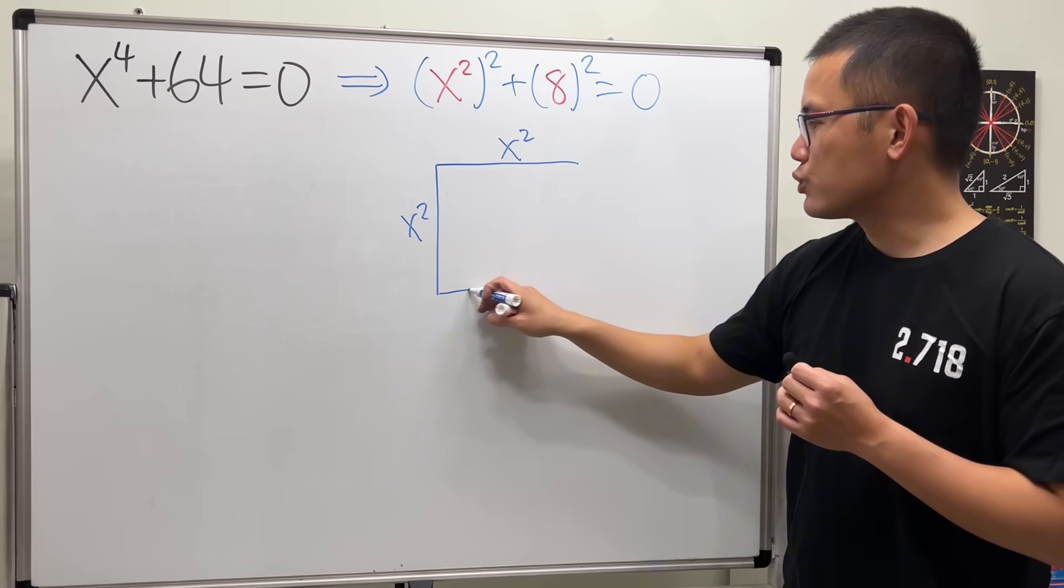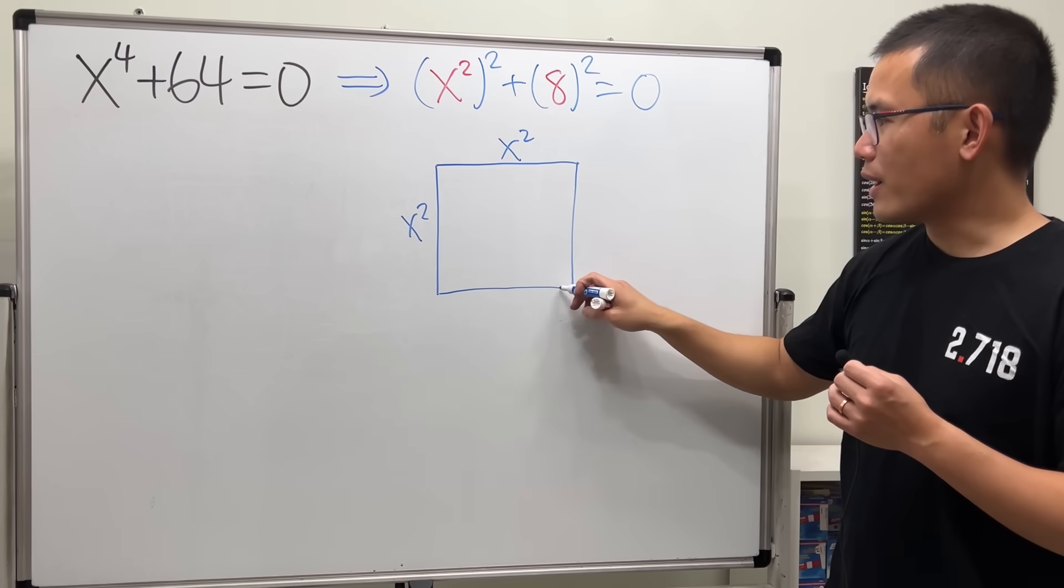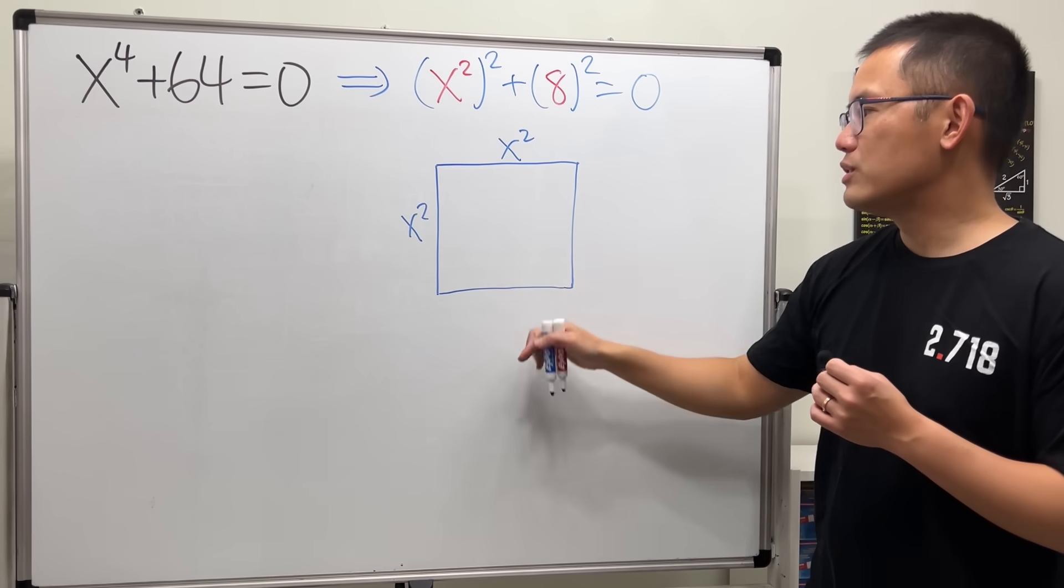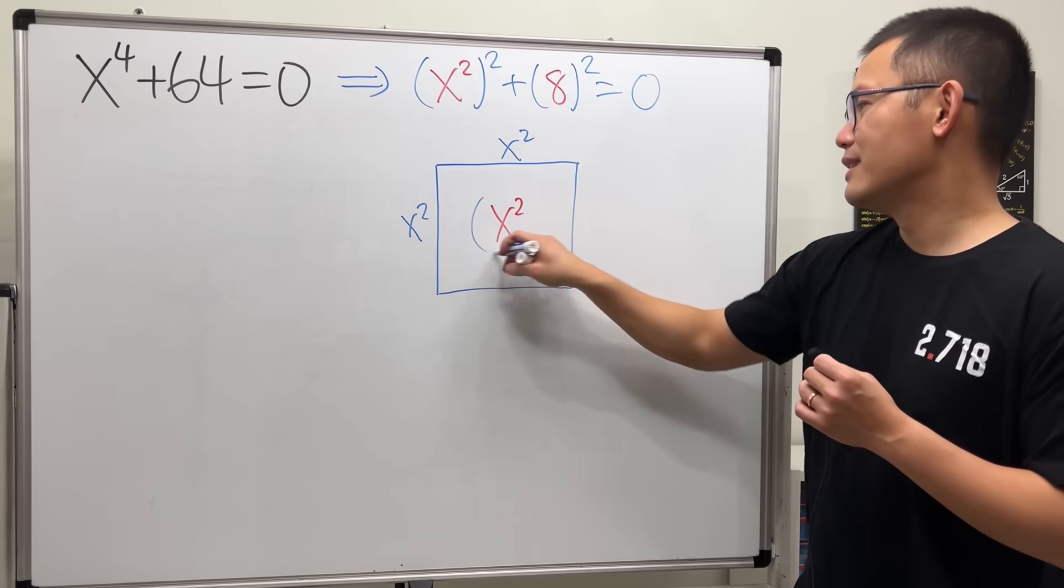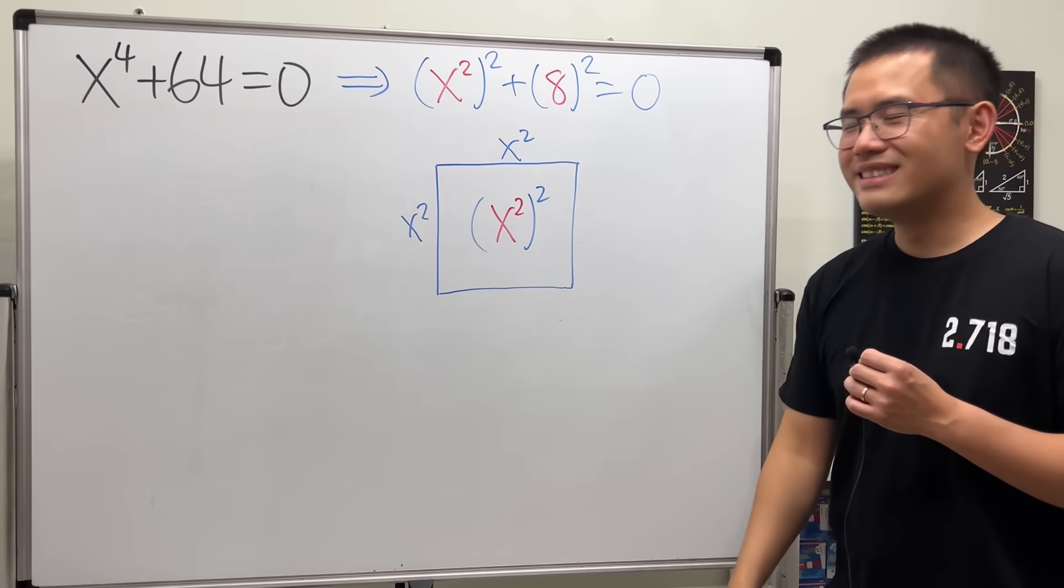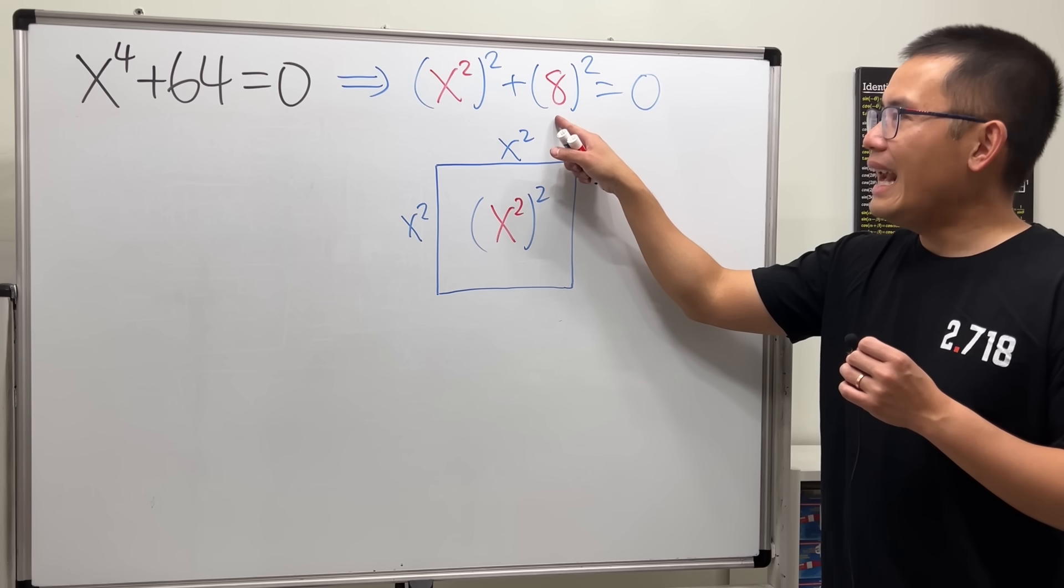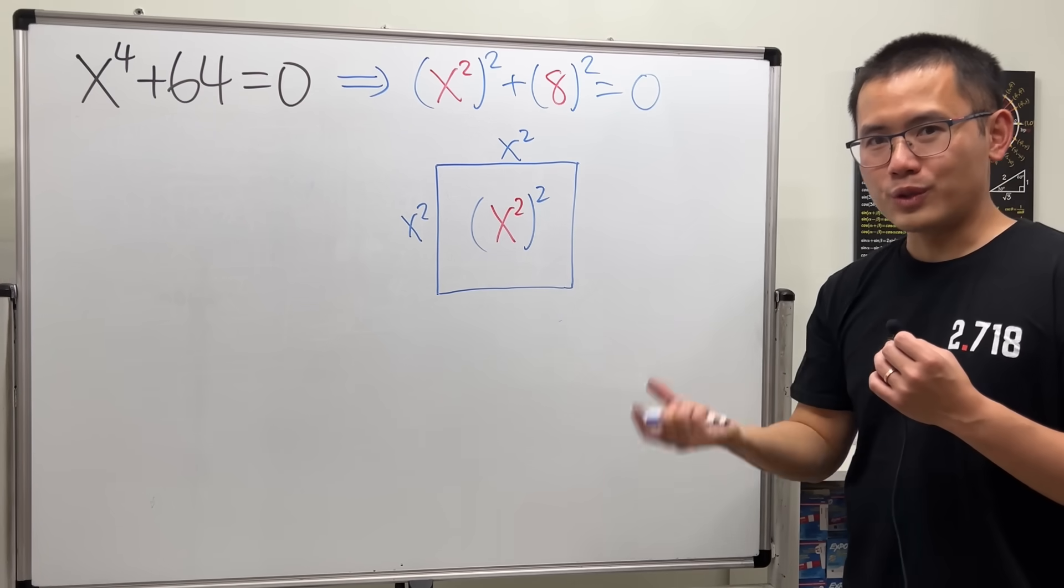And then I will just draw a square from it. And the area of this is just x to the fourth power, right, because each side is x squared. And then square that. Next, we have the 8 squared. It's also a square.